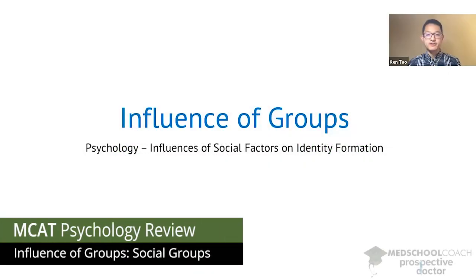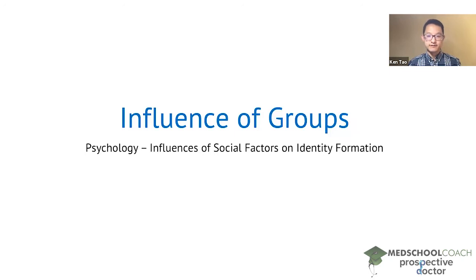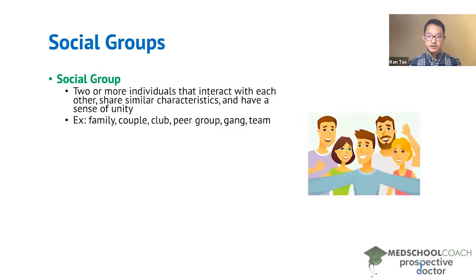In this video we're going to go over the influence of groups, focusing on the different types of groups you need to know for the exam. To start we can talk about social groups. A social group is two or more individuals that interact with each other, share similar characteristics, and have a sense of unity.